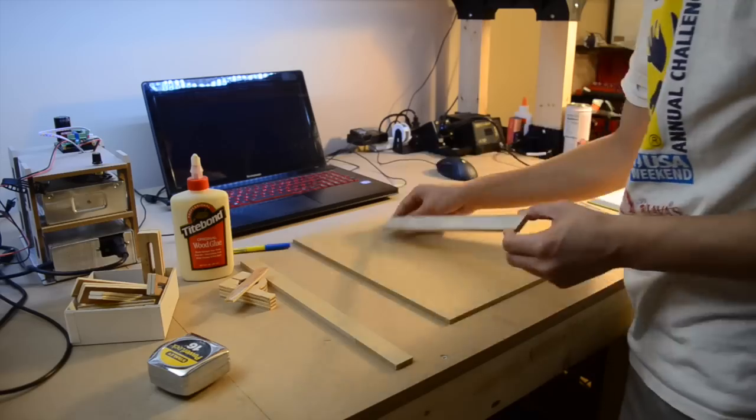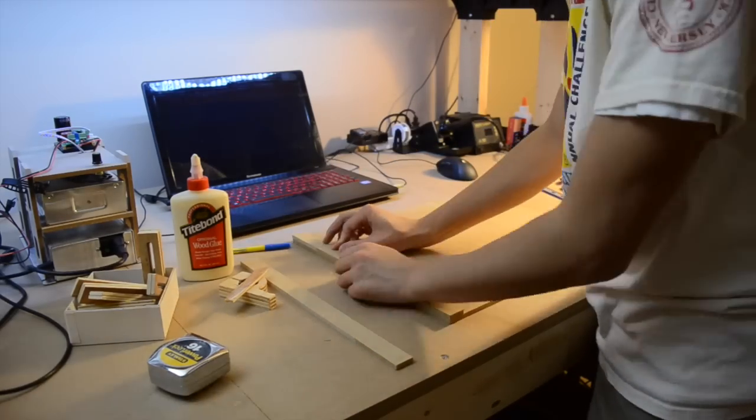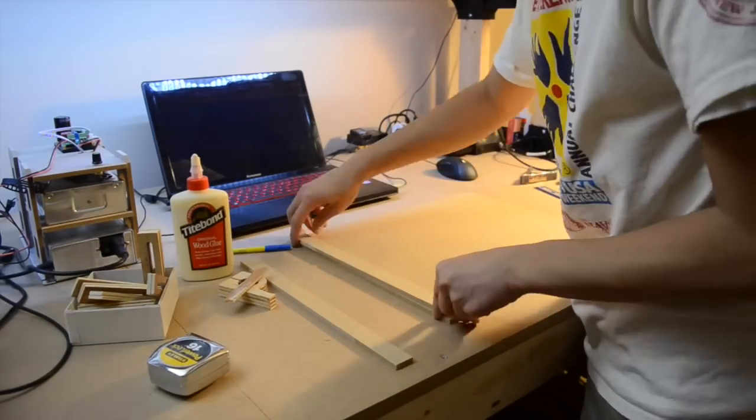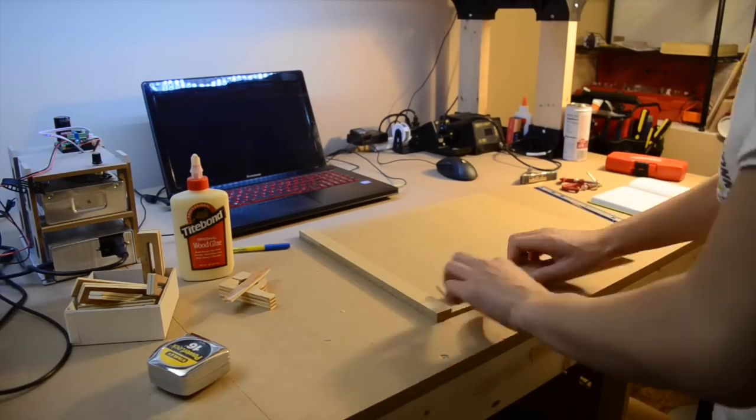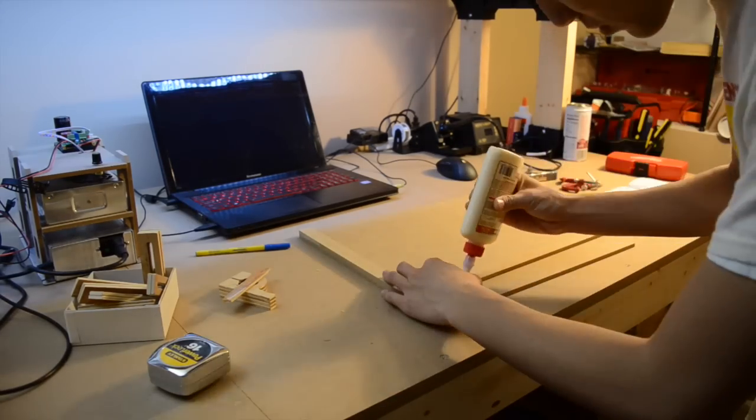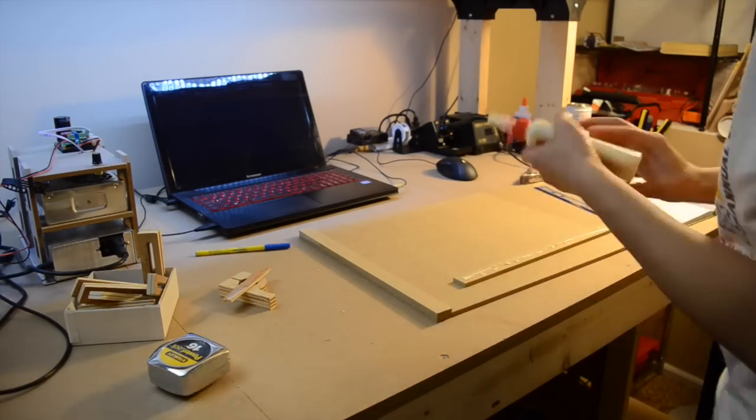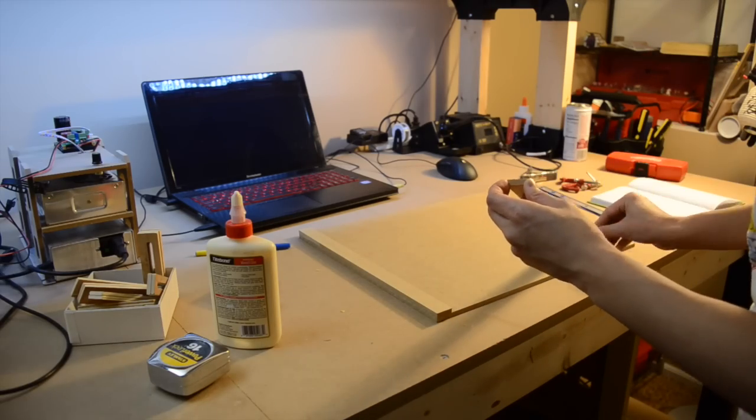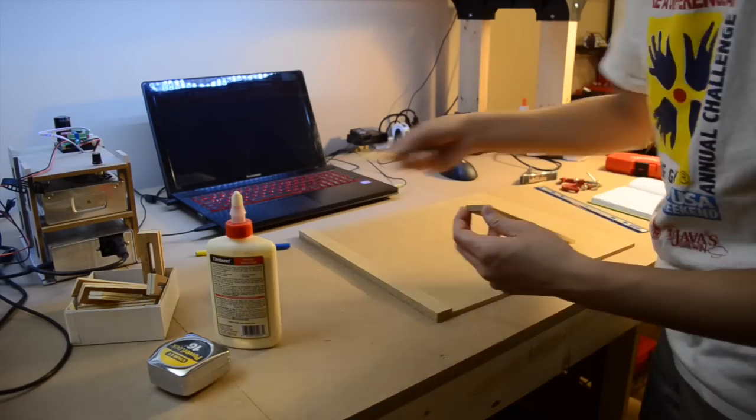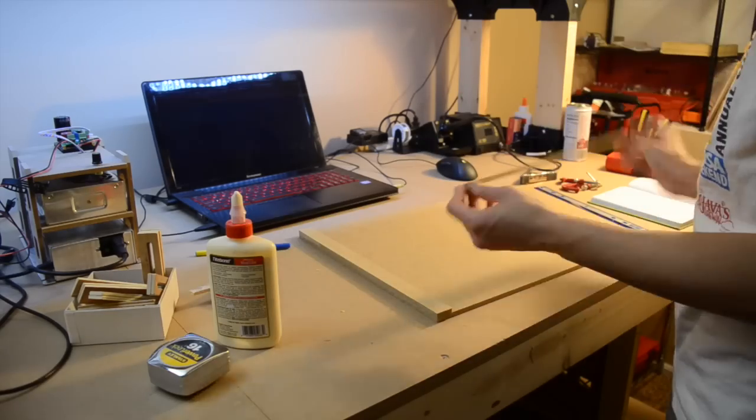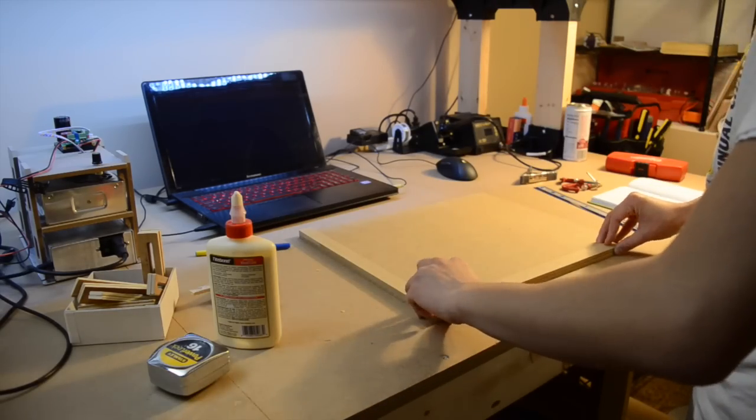You can level your Shapeoko in one of two ways. The first would be to adjust the attachment points of your gantry rails to your base frame. This isn't really feasible on the Shapeoko 3 though, because there's not enough clearance in the mounting holes to make any appreciable adjustments. The second method is to machine your wasteboard to a fixed depth to mask any pre-existing imperfections. This is how I chose to attack the problem.